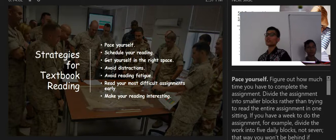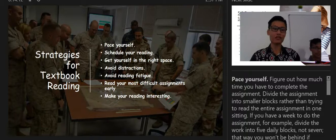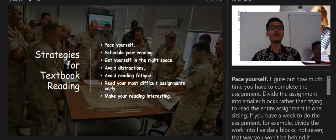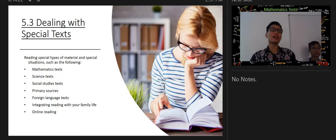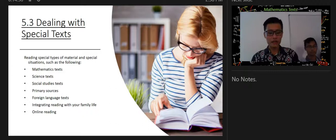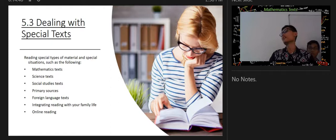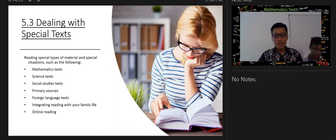Strategies for textbook reading include: pace yourself, schedule a reading time, get yourself in the right space, avoid distractions, avoid reading fatigue, read your most difficult assignments earlier, and make your reading interesting. In college you will encounter special texts and special situations — types listed include mathematics text, science text, social studies text, primary sources, foreign language text, integrating reading with family life, and online reading.